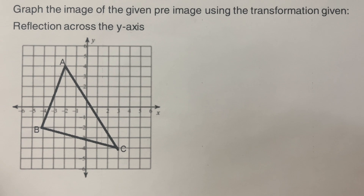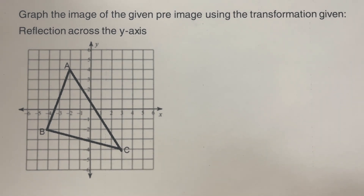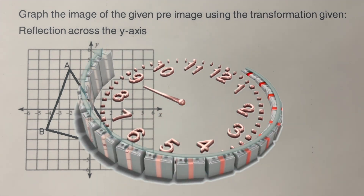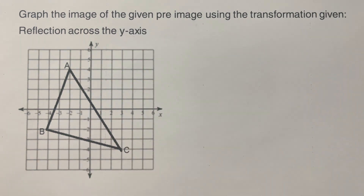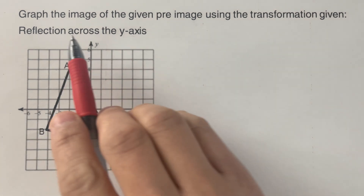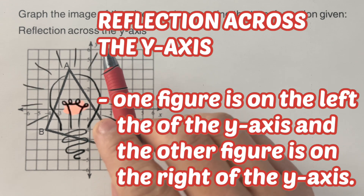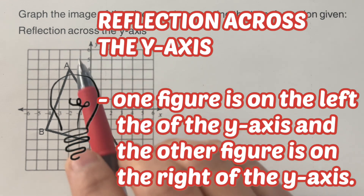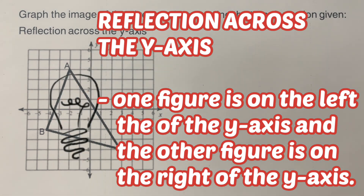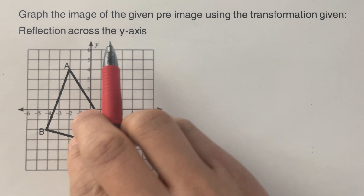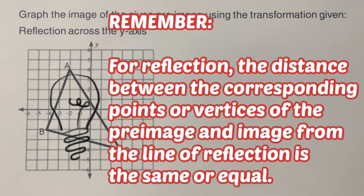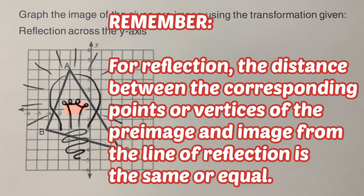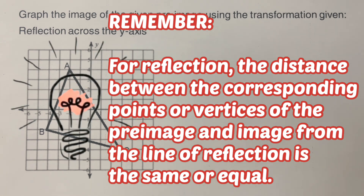At this time I'd encourage you to pause this video and try this next problem on your own, then unpause and check your answer. We are supposed to graph the image of the given pre-image using the transformation given — a reflection across the y-axis. When we say reflection across the y-axis, one figure is on the left side of the y-axis while the other is on the right side, so reflection across the y-axis means reflection side to side. The distance between two corresponding points from the line of reflection is the same or equal.